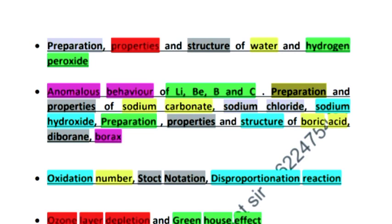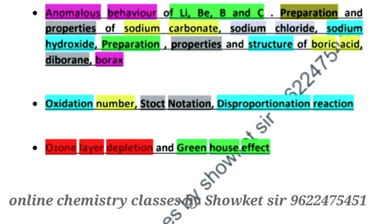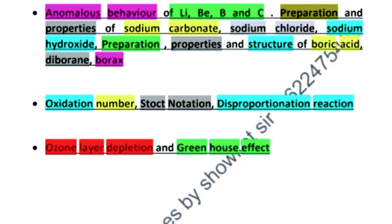Oxidation number and stock notation like nickel(II) sulfate. Disproportionation reaction is very important. Oxidation number, also the ozone layer depletion - how ozone layer gets depleted. Greenhouse effect, greenhouse gases. And water and atmospheric pollution.